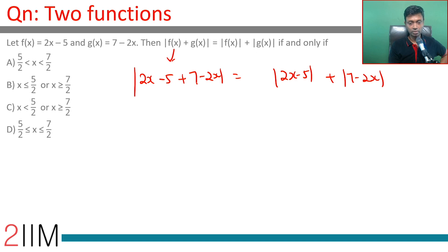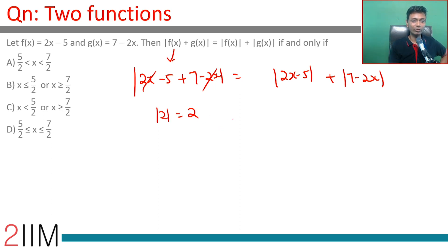Now, 2x - 5 + 7 - 2x simplifies to |7 - 5| = |2| = 2. So |f(x) + g(x)| = 2. We need the right-hand side to also equal 2.